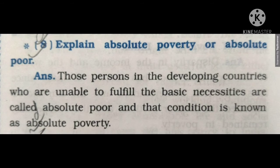ऐसे गरीब लोग जो अपनी basic necessities — जैसे education, clothing, shelter, और medical services — इन basic necessities में से किसी को भी पूरा नहीं कर पाते हैं, तो ऐसे तबके के जो लोग होते हैं, जो परिवार होते हैं, उनको absolute poverty में count किया जाता है।